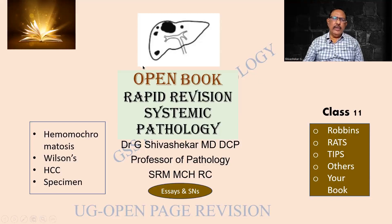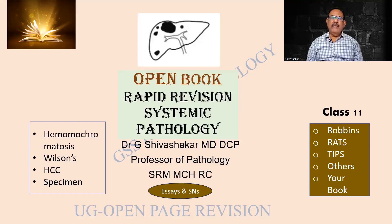Hepatocellular carcinoma — the picture over here. Blind diagrams like this will feature in exams. It can be unifocal, multifocal, or diffuse — three patterns. Externally there can be caving in of the capsule, which is called umbilication. Microscopically there are different types: well differentiated, poorly differentiated, or there can be a fibrolamellar variant, which carries a better prognosis.